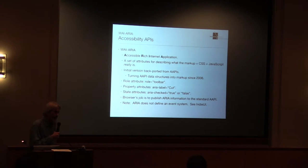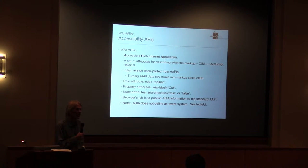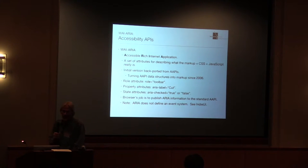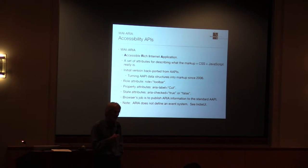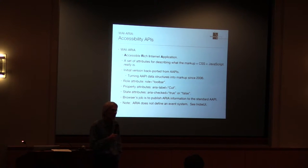ARIA stands for Accessible Rich Internet Applications. As Paul already told you, it's a set of attributes for describing what the markup, CSS, and JavaScript are actually doing as intended by the author. An initial version was generated around 2006. What they did was take the existing accessibility APIs — mostly iAccessible2 and ATK/AT-SPI — and simply took the data out of the accessibility API and turned it into markup, into text strings.